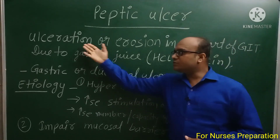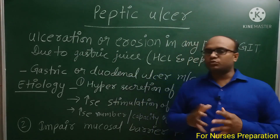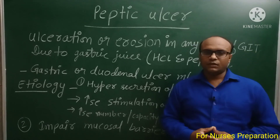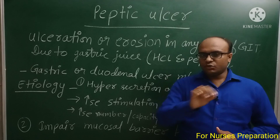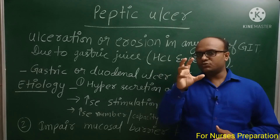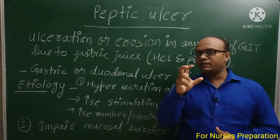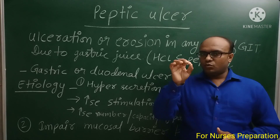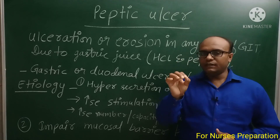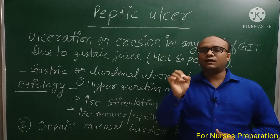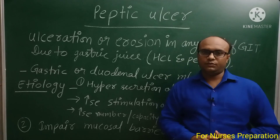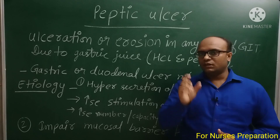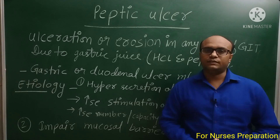अब ulceration term को थोड़ा simplify करते हैं। Ulcer क्या है? मान लीजिए कोई organ है, उसकी जो inner membrane है जो उसे protect कर रही है, उस membrane का किसी reason के कारण breakdown हो जाना, उसकी continuity में break आ जाना, या फिर वहाँ पर घाव बन जाना ulcer कहलाता है।